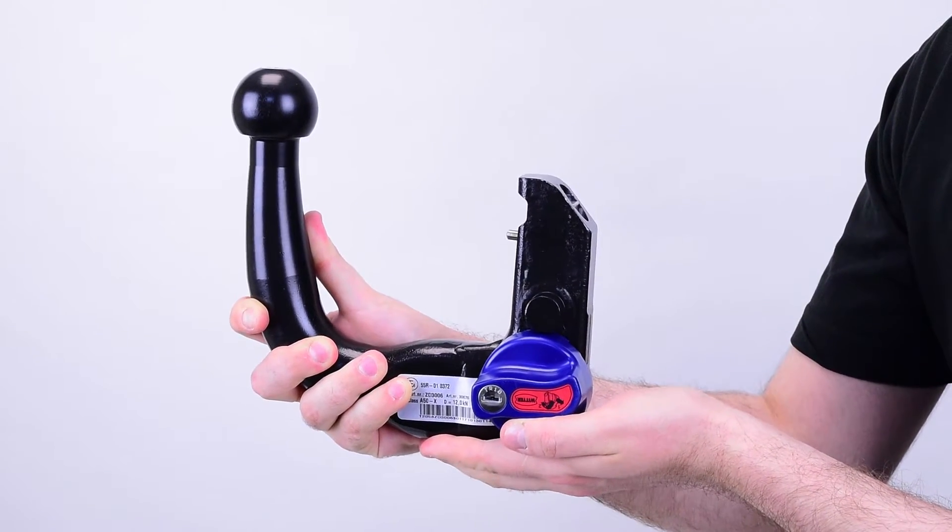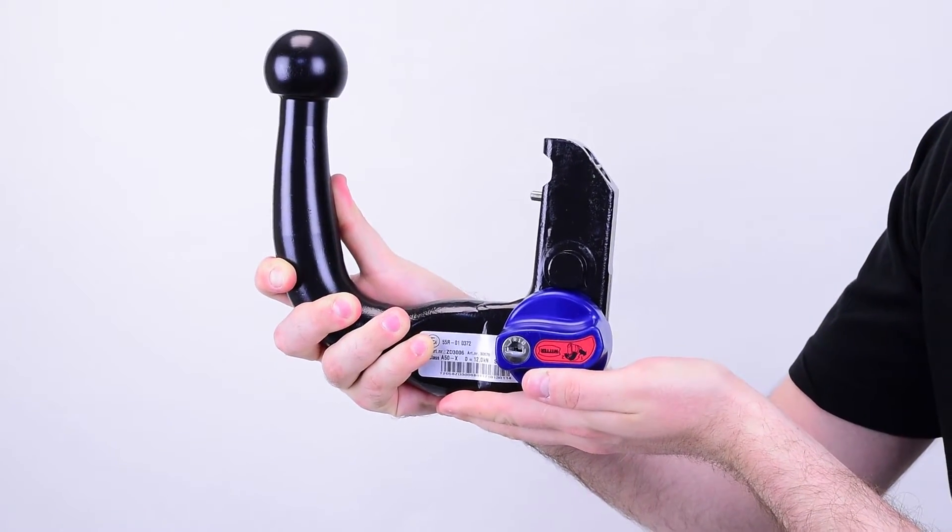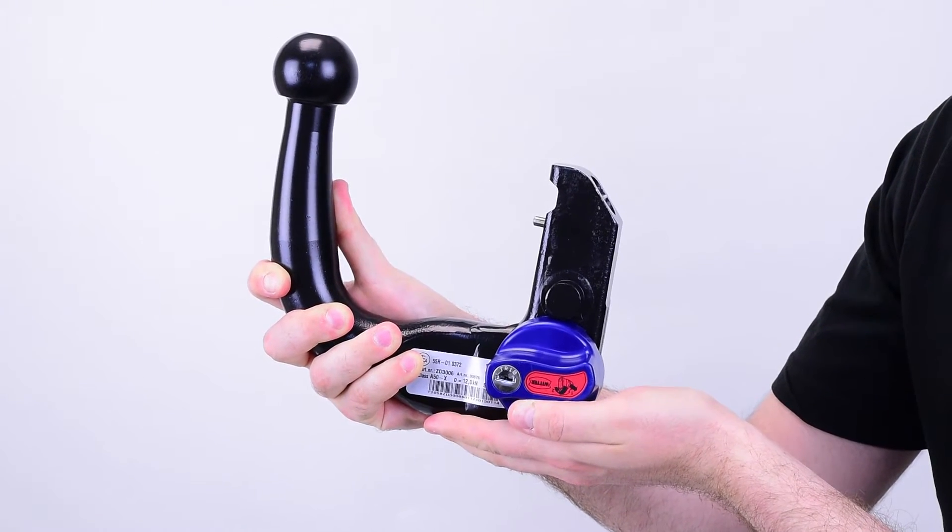Now your tow bar neck is ready to attach into the housing. The locking mechanism will fire and it will be securely attached to the tow bar.